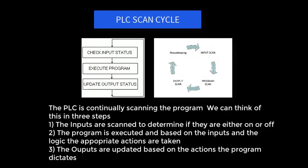The PLC is continually scanning the program. The inputs are scanned to determine if they are either on or off. The program is executed based on the inputs, and then the outputs are updated based on the actions of the program.